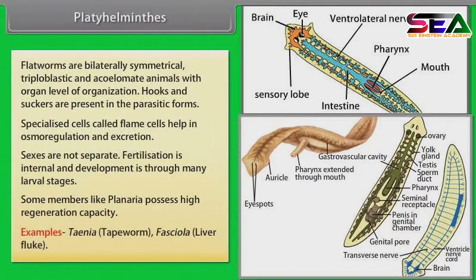Examples: Taenia, i.e. tapeworm, and Fasciola, i.e. liver fluke.